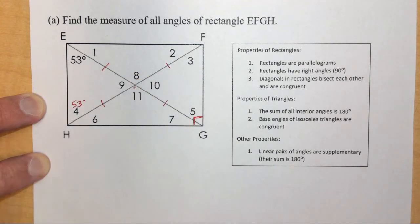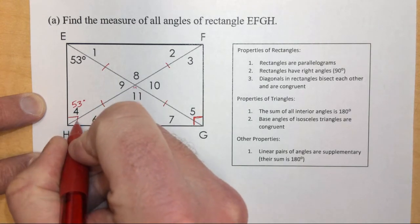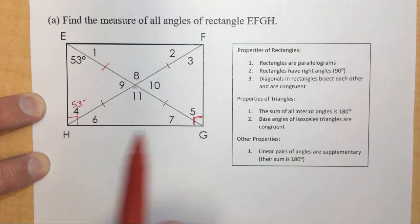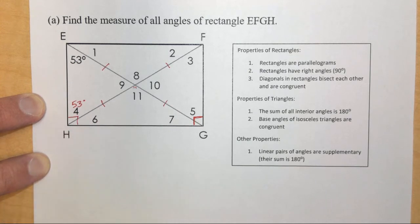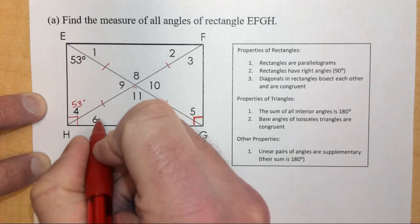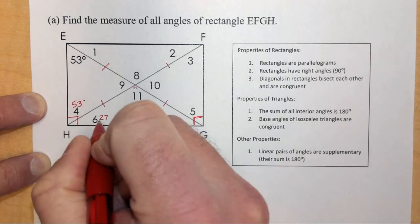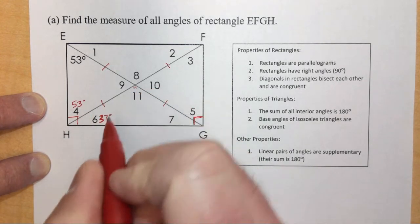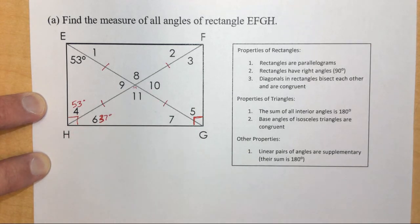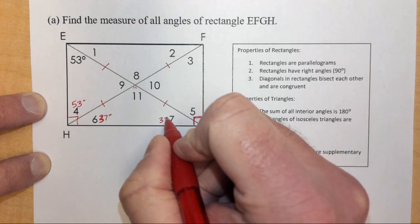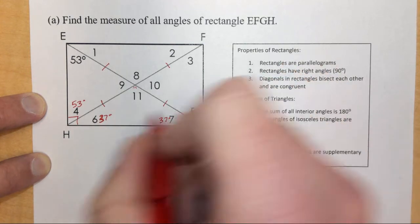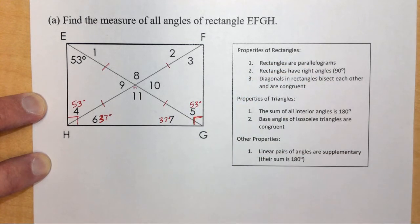Since part of the angle at E-H is 53 degrees, angles 4 and 6 must add up to 90 degrees because the full corner angle E-H-G is a right angle. Taking 90 minus 53 gives us angle 6 equals 37 degrees. Since angle 6 is 37 degrees and we have another isosceles triangle, angle 7 must also be 37 degrees.